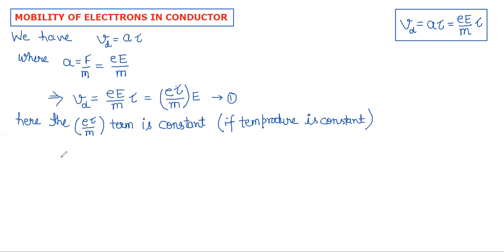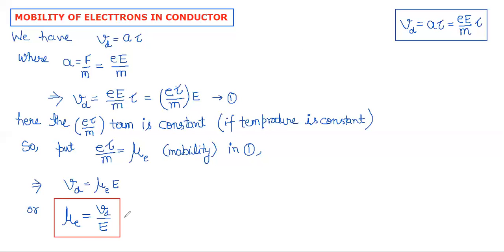And this constant number is defined as mobility. So eτ/m equals mobility, which we show as μe (mu e) of electron. So this becomes VD proportional to μe into E, or we can also write μe proportional to VD upon E. This is equation number 2.